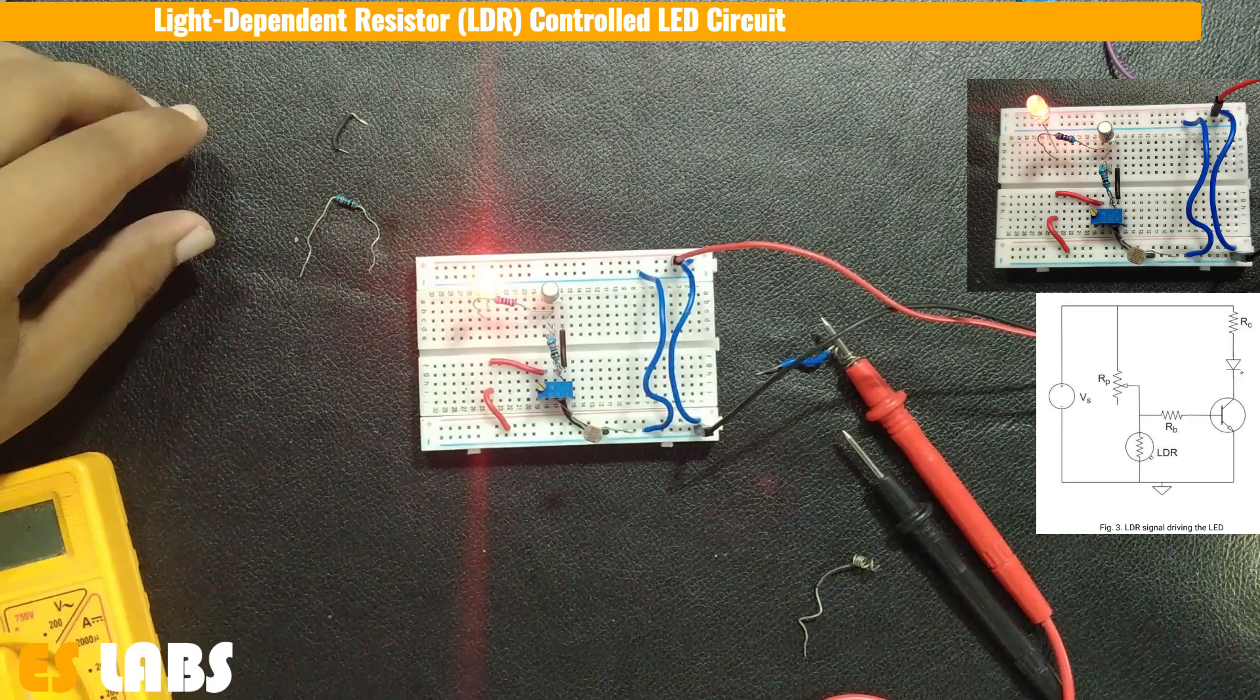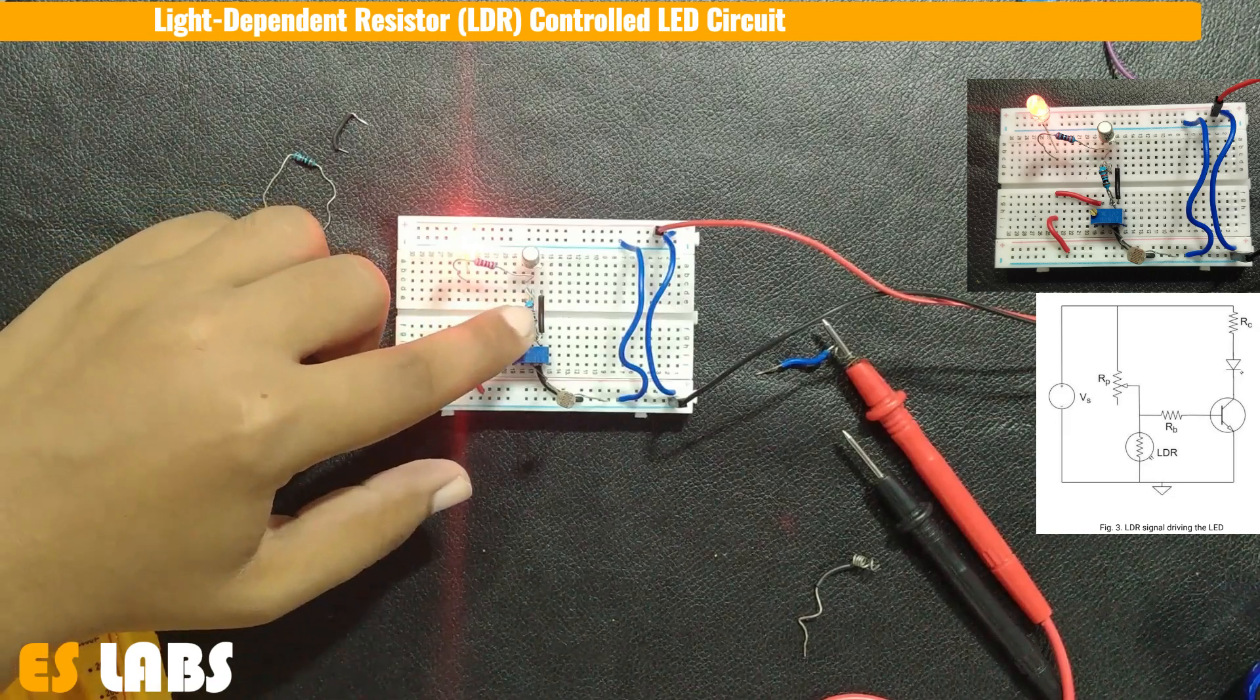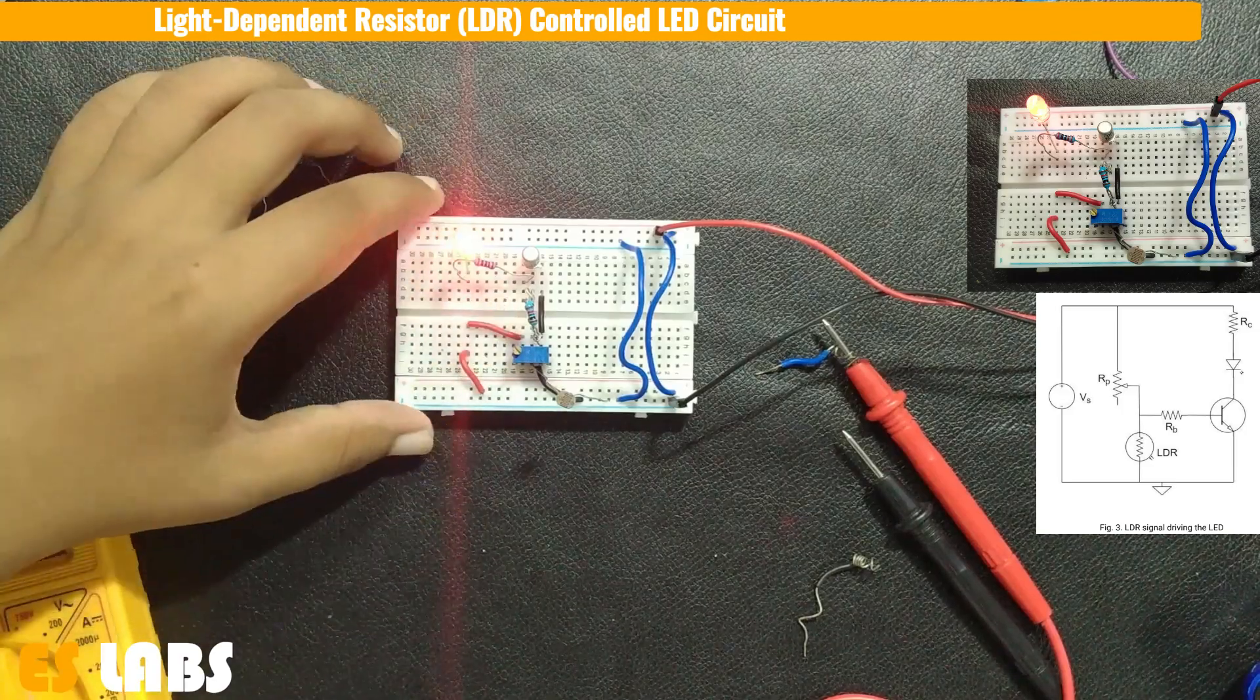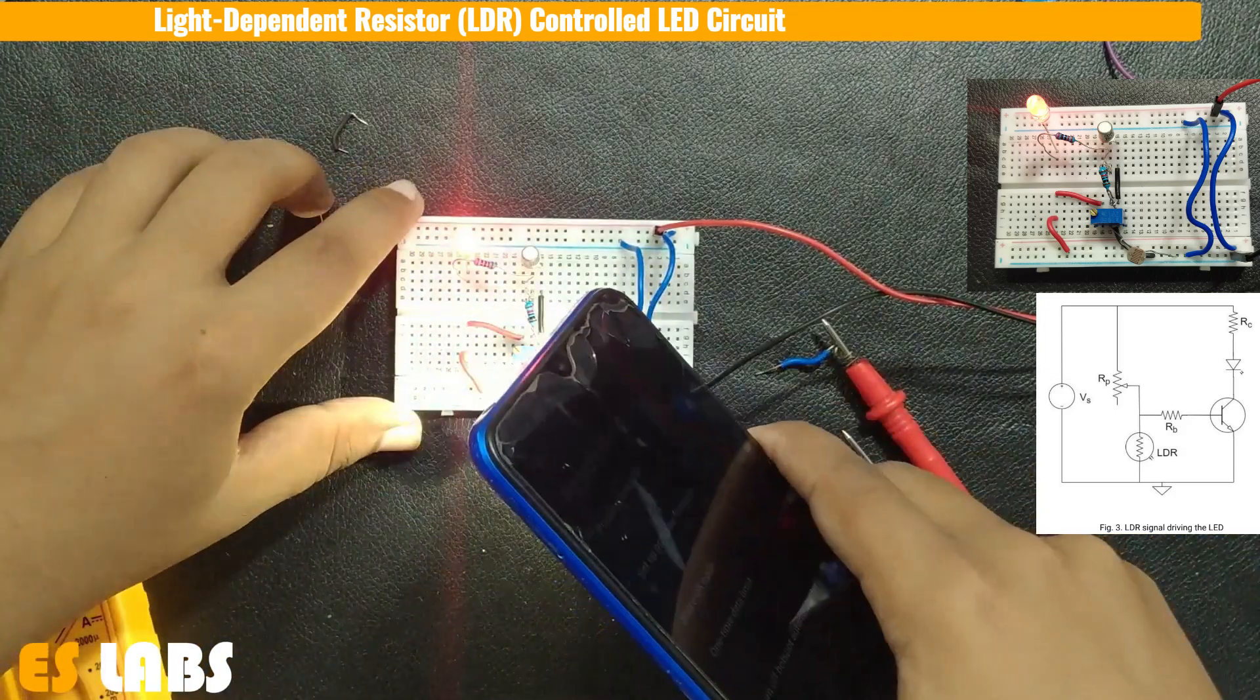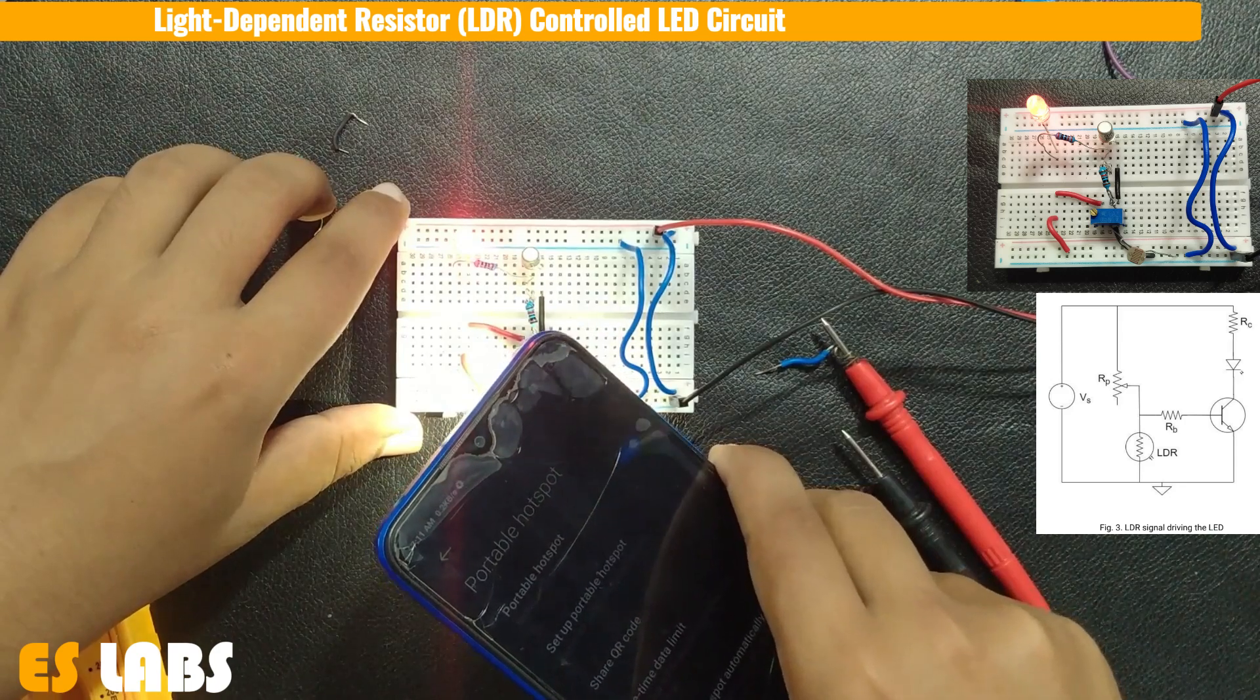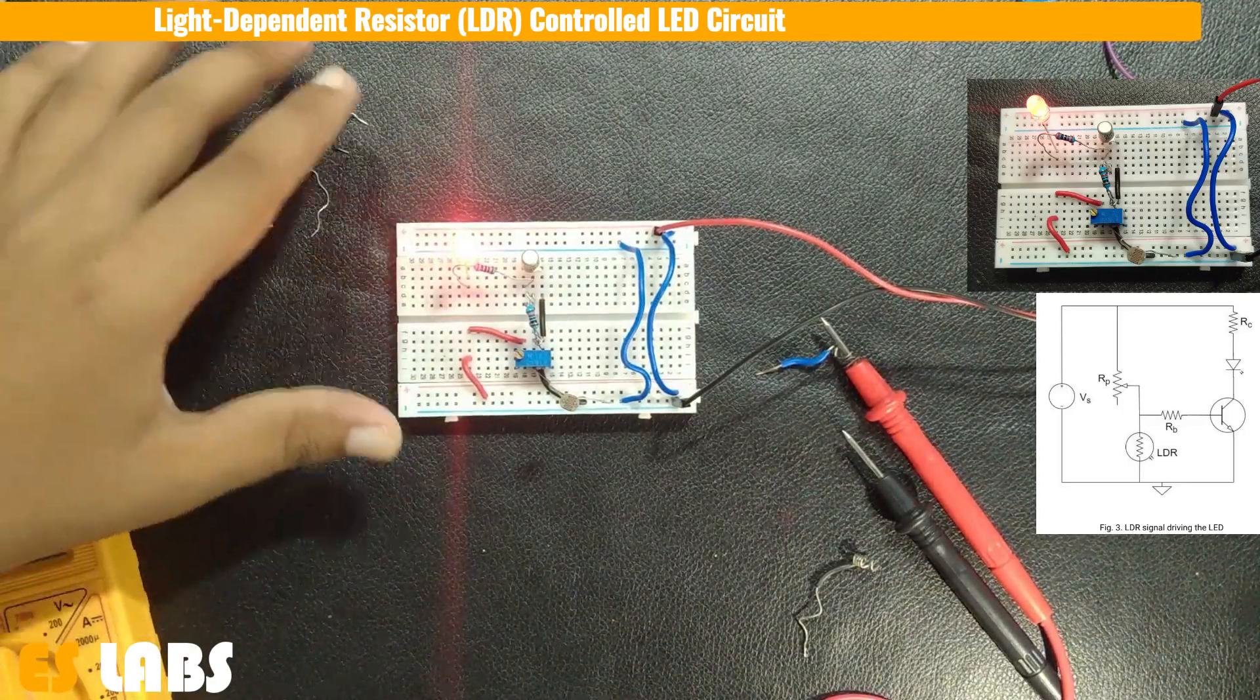So this is the last part of our experiment. I have connected this LED in series with this 200 ohm resistor. And this is 5 kilo ohm resistor connected to the second terminal of this potentiometer. And we are giving the 5 volt. And this is the light dependent resistor I have connected. On glowing light we can see that this LED becomes off.